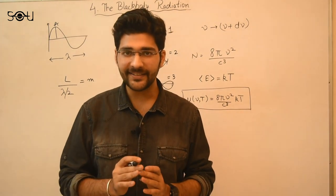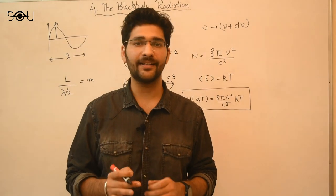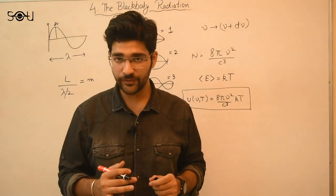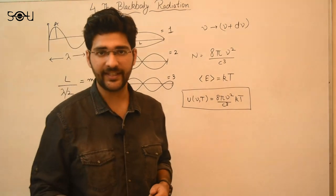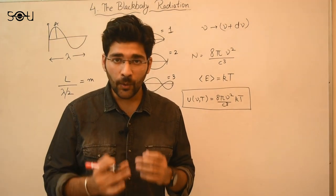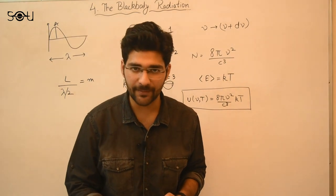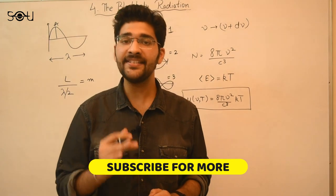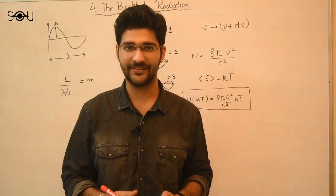The third and last attempt to explain the black body spectrum was made by Max Planck, a German physicist also known as the father of quantum mechanics. In the next video, we will see how Max Planck found a flaw in this formula, rectified it, and successfully explained the black body spectrum. The core concept of quantum mechanics is hidden in Planck's explanation of the black body spectrum. If you liked this video, make sure you hit the like button and subscribe to our channel. Thank you.